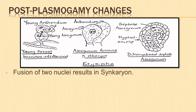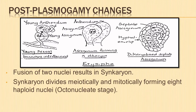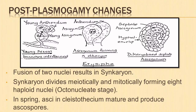Binucleate intercalary cells of the ascogenous branches function as ascus mother cells. A synkaryon is formed when the two nuclei in the ascus mother cell fuse. The synkaryon first undergoes meiosis followed by mitosis to form eight haploid nuclei — this is known as the octanucleate stage in the development of an ascus. In spring, the asci in the cleistothecium mature and produce ascospores.